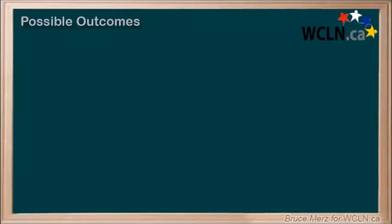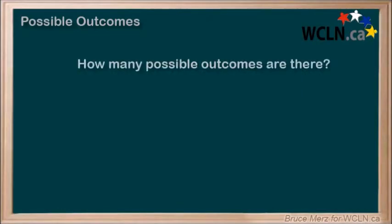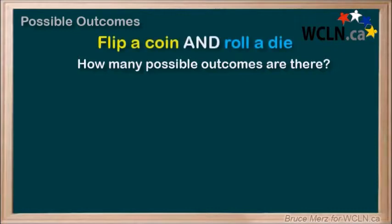We are trying to figure out the total number of outcomes or results that are possible when we flip a coin and also roll a regular six-sided die. What if we just went through all of the possibilities one by one?